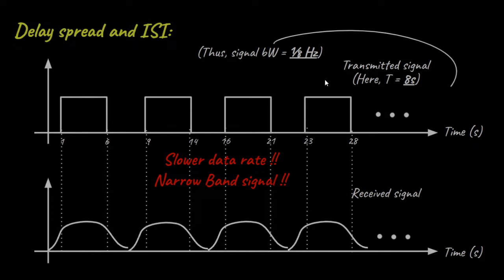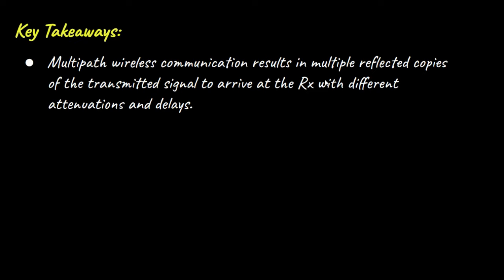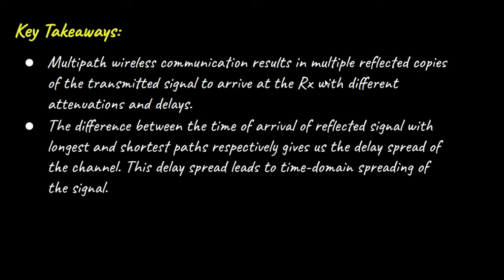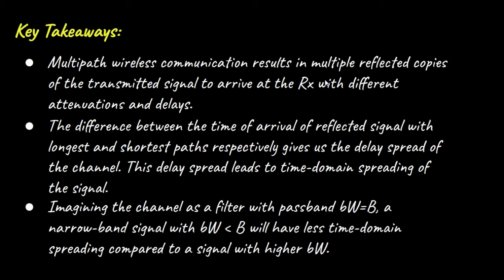So, finally, in this video we learned that multipath wireless communication results in multiple reflected copies of the transmitted signal arriving at the receiver with different attenuations and delays. The difference between the time of arrival of reflected signals with the longest and the shortest paths respectively gives us the delay spread of the channel. This delay spread leads to time domain spreading of the signals. Imagining the channel as a filter with a passband bandwidth of B, a narrow band signal with bandwidth lesser than B will have less time domain spreading compared to a signal with higher bandwidth.